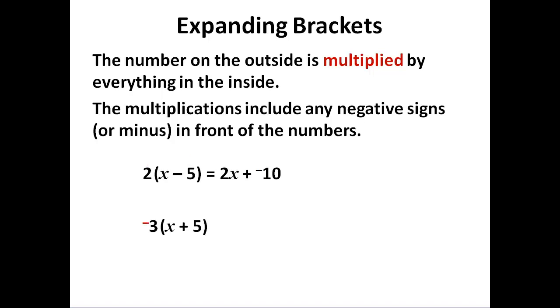The minus here is on the outside and stays with the 3. So we have minus 3 times x and minus 3 times 5, giving minus 3x plus minus 15, or minus 3x minus 15 if you prefer.